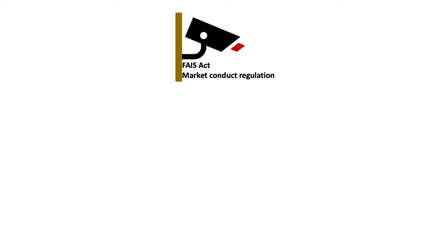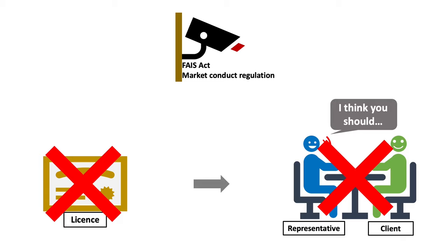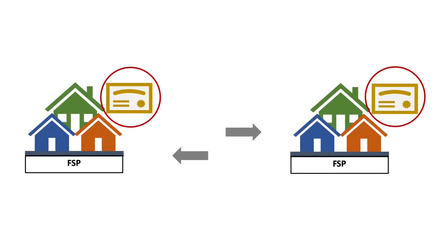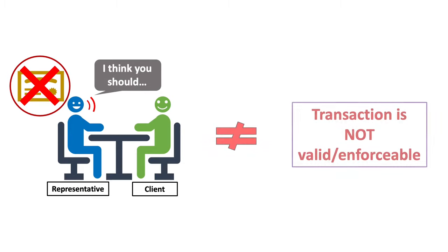Under the FACE Act, as from 30 September 2004, no one should act as a financial services provider, or FSP for short, without a license. Equally, no one should act as a representative unless that person is appointed by an authorized FSP. Also, an authorized FSP may only conduct financial services related business with an FSP that is licensed. So if an unauthorized FSP or representative concludes a transaction with a client, such a transaction will lack authority — it is not valid and will not be enforceable in law.